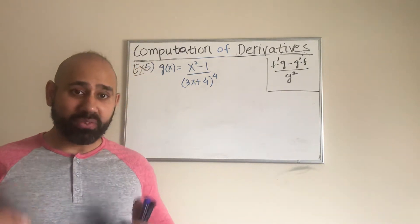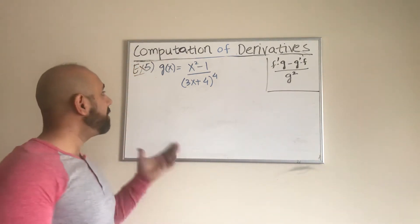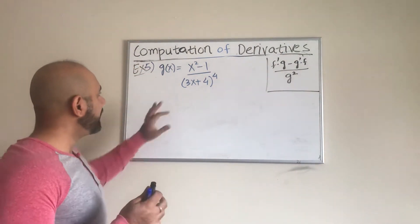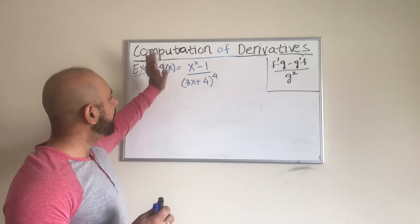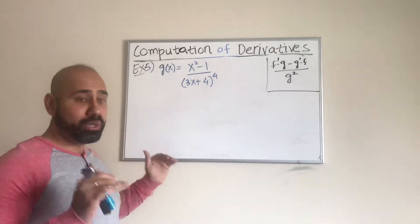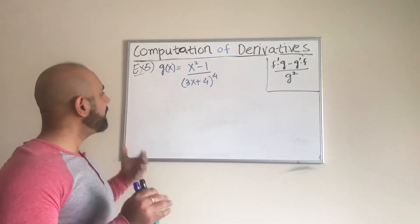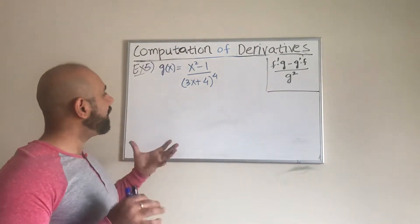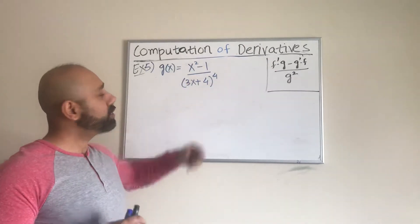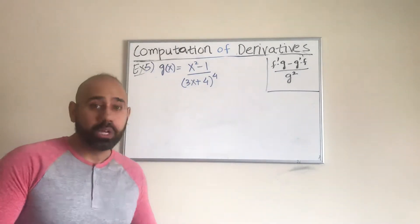Evaluating the derivative of functions. This time we have a quotient: x squared minus 1 by itself in the numerator, and in the denominator we have a linear function raised to the power 4.